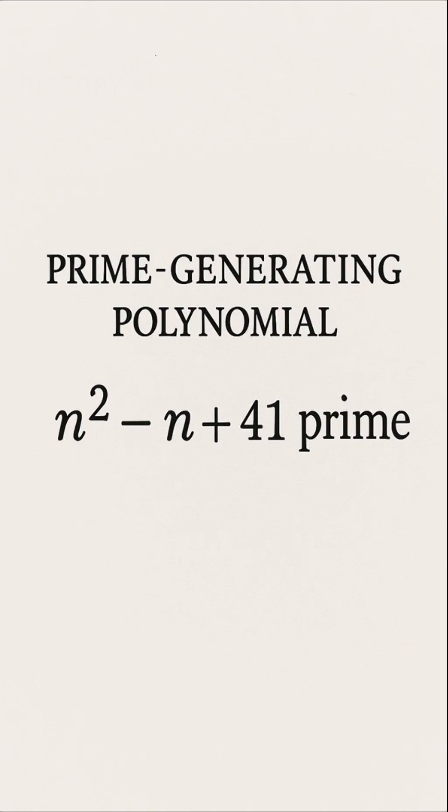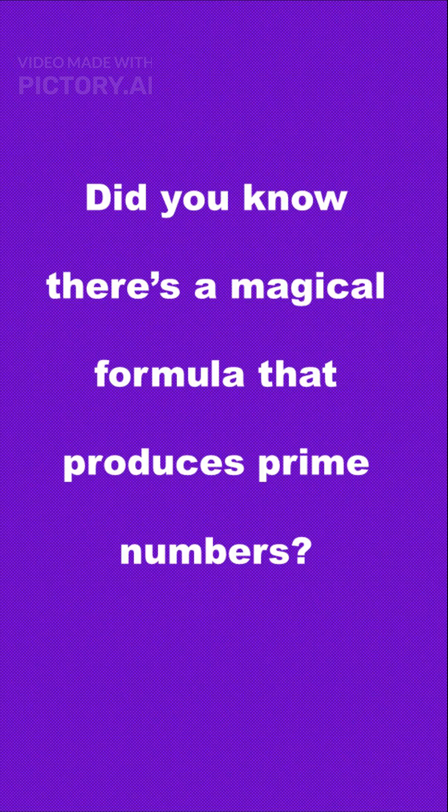Let's dive into the fascinating world of prime numbers with a polynomial that has intrigued mathematicians for centuries: n squared minus n plus 41. Did you know there's a magical formula that can produce prime numbers? It's a mathematical wonder that seems almost too good to be true.